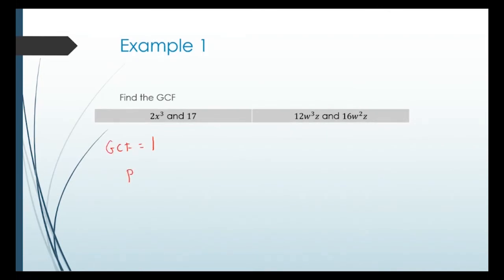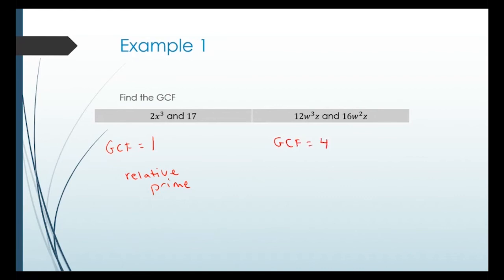When the GCF is 1, the terms are called relatively prime — they don't have anything in common. For the next example, 12W cubed Z and 16W squared Z: the largest number I can divide out of 12 and 16 is 4. Taking the smallest exponent for W gives W squared. The Z has the same exponent in both terms, so I include a Z. The GCF is 4W squared Z.